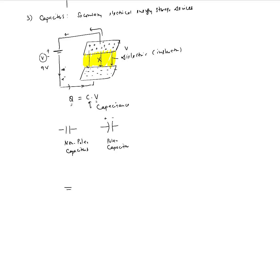For example, if we have a battery and a nonpolar capacitor across it, after a while when the capacitor is fully charged there will be no flow of current. The positive terminal charges one plate positively and the other negatively, with a dielectric in between. There can be no flow of electrons from the negative plate to the positive plate of the capacitor.